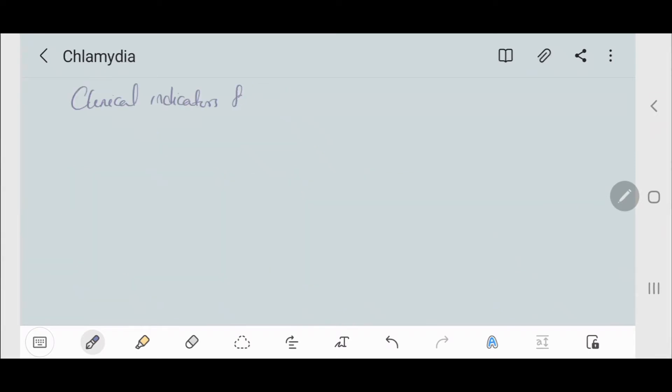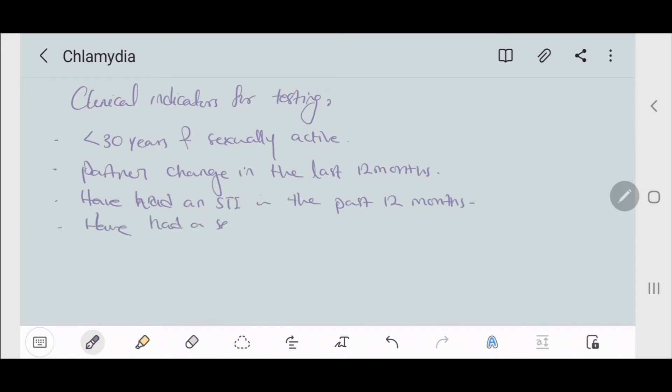The clinical indicators for testing are less than 30 years and sexually active, partner change in the last 12 months, an STI in the past 12 months, and a sexual partner with an STI.